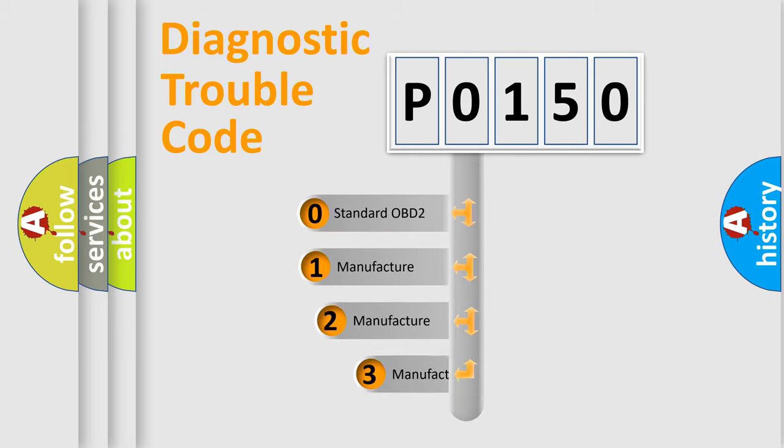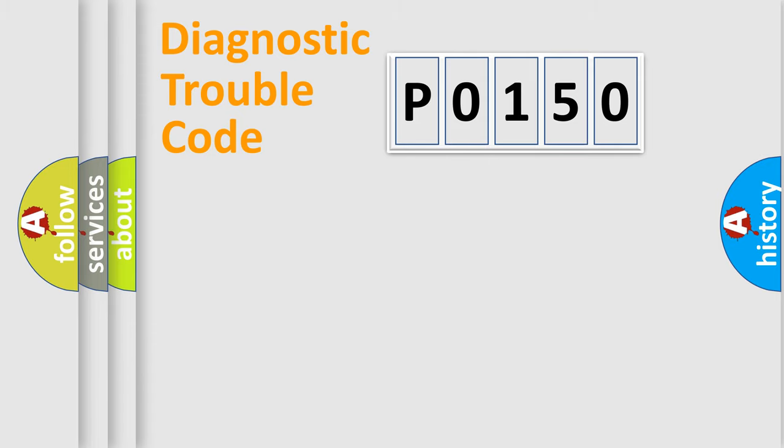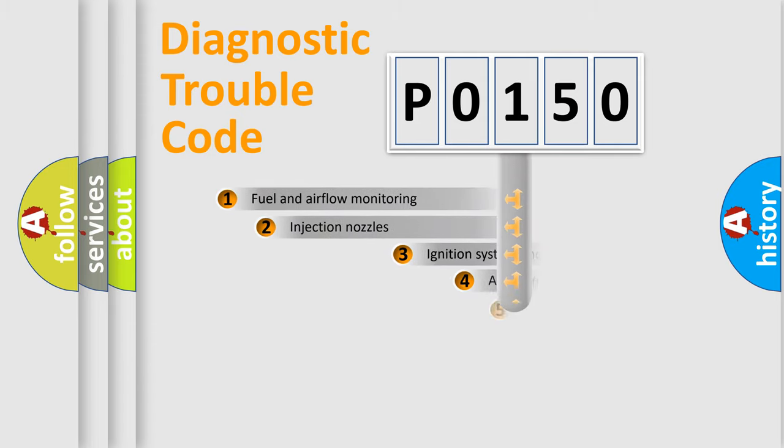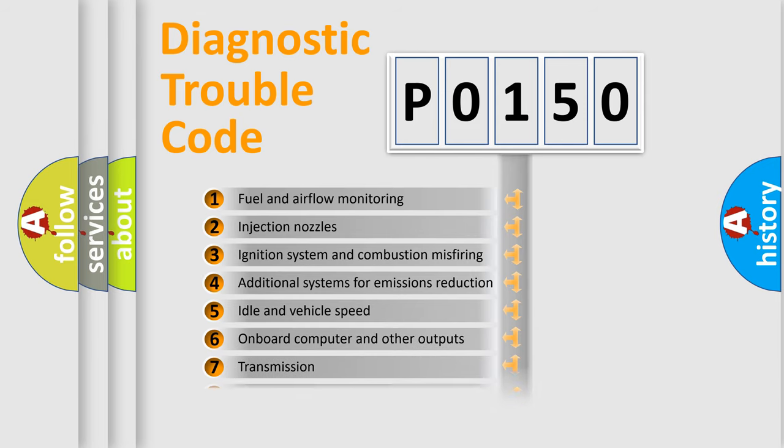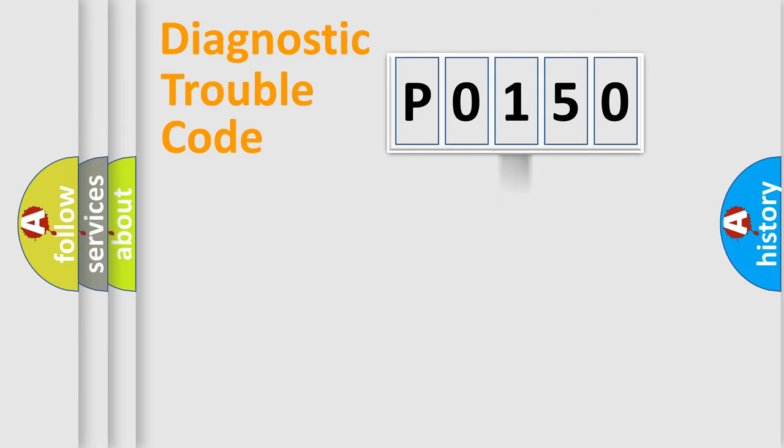If the second character is expressed as zero, it is a standardized error. In the case of numbers 1, 2, or 3, it is a manufacturer-specific expression of the car error. The third character specifies a subset of errors. The distribution shown is valid only for the standardized DTC code.